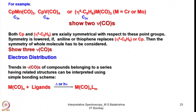If a heteroatom is introduced — for example, sulfur to make thiophene, or nitrogen to make pyridine — the molecular symmetry is lost and the symmetry of the whole molecule must be used. As a result, three CO stretching frequencies are observed in both cases instead of two.